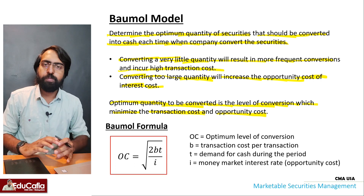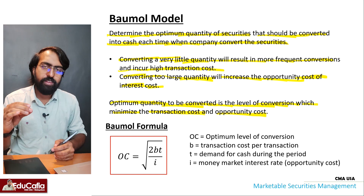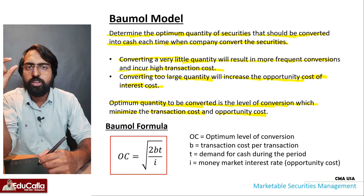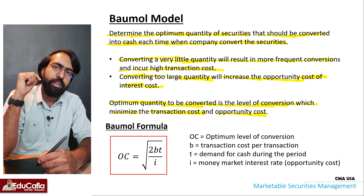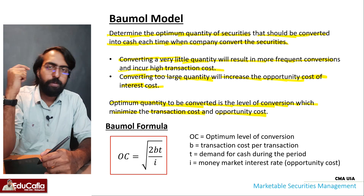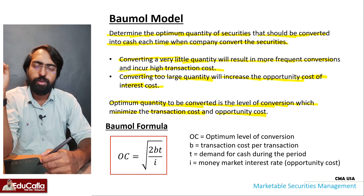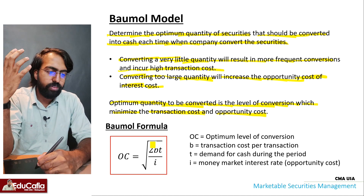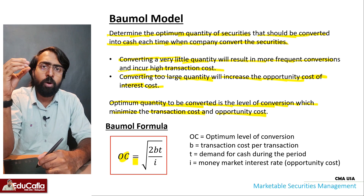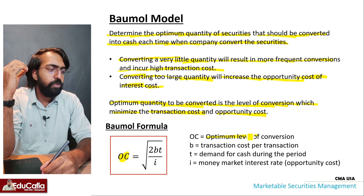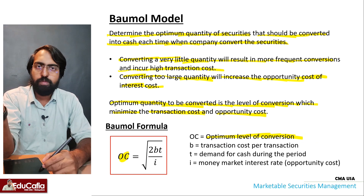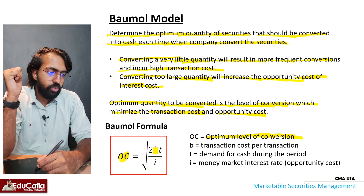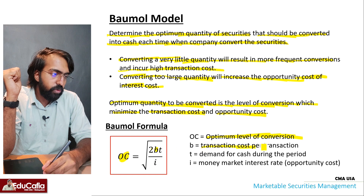The optimum quantity is found using the Baumol formula: OC = √(2BT / i). Here, B is the transaction cost per transaction, T is the demand for cash during the period, and i is the money market interest rate, representing the opportunity cost.